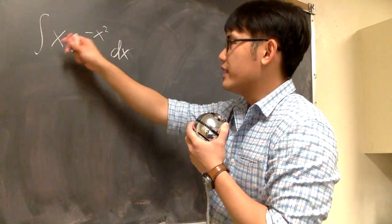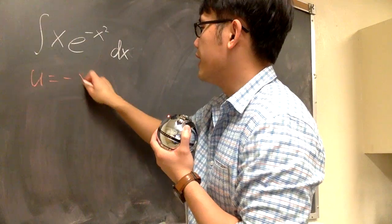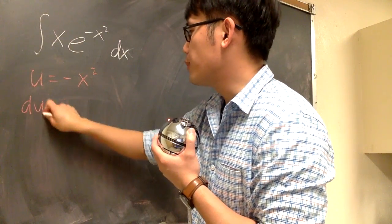So we'll integrate this real quick. The integral of x times e to the negative x squared. We let u equals negative x squared, and then we can differentiate both sides.